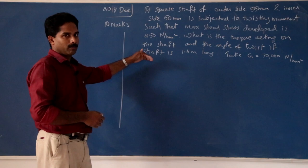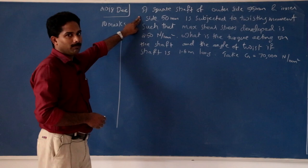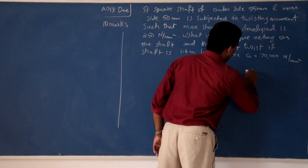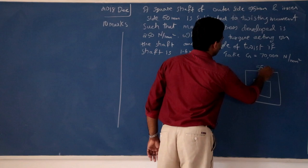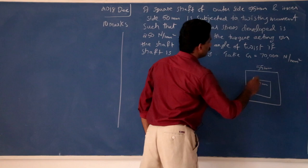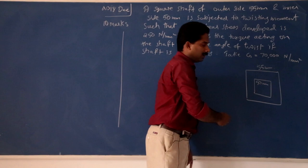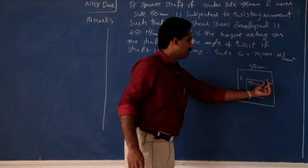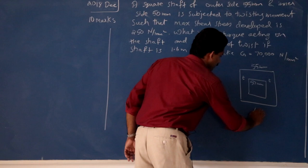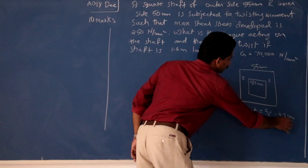Another university question — 2018 December, 10-mark question. A square shaft of outer side 55 mm and inner side 50 mm. The rectangle is a square shaft. Outer is 55 mm and inner length is 50 mm. So, 2 times thickness gives the difference. Difference is 55 minus 50 equals 5 mm. So, thickness is equal to 5 divided by 2 — 2.5 mm.